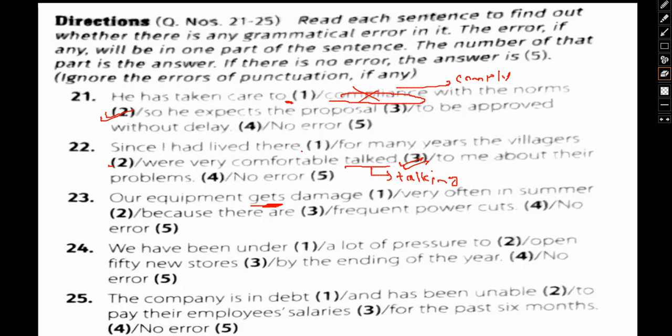Sorry, I mentioned the wrong part. Gets is okay. Damage—this will be past tense of the following will be used. In place of damage, we can use damaged: D-A-M-A-G-E-D. So option 1 is where we actually find the error.